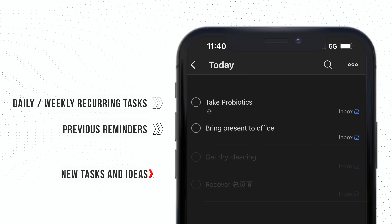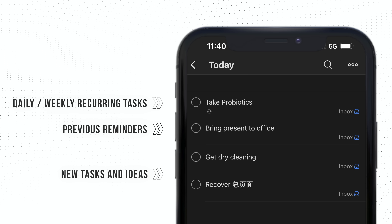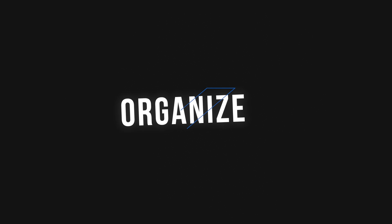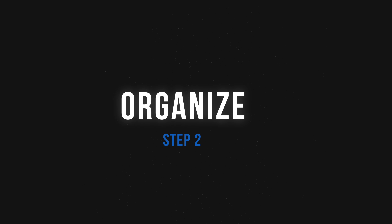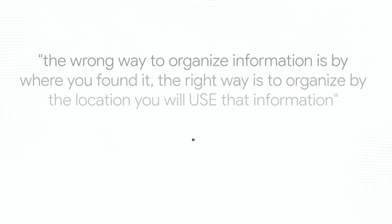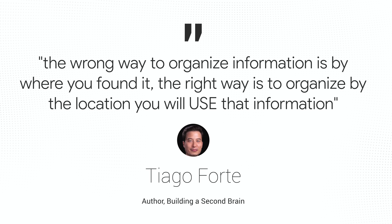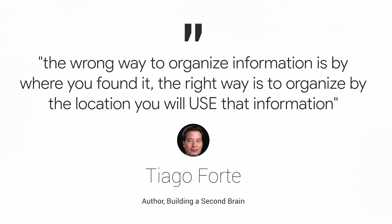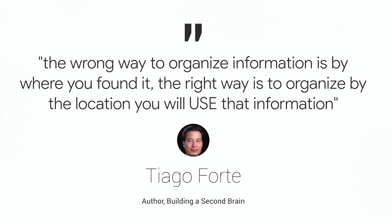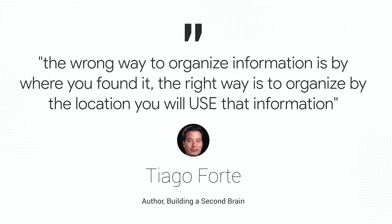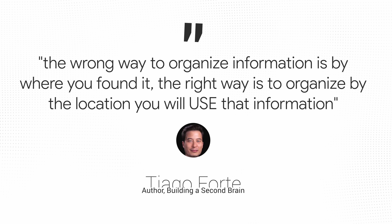So on a typical day when I wake up, my Todoist starts off with recurring tasks and reminders I've input previously. Then throughout the day, new action items and ideas are added. Which brings us to step two: organize. The biggest pro tip here is from Tiago Forte — the wrong way to organize information is by where you found it; the right way is to organize by the location where you will use that information.